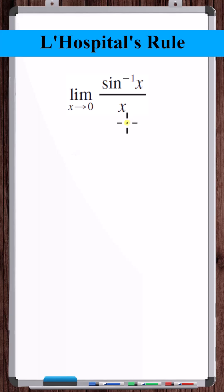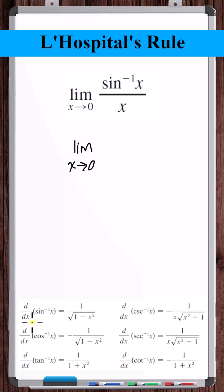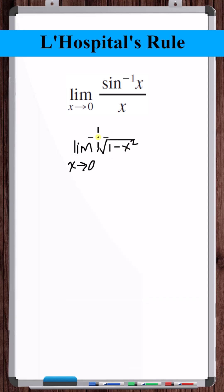An indeterminate form of type 0 over 0, we can solve using L'Hopital's rule. What is the derivative of the inverse sine of x? If we check the table of derivatives of inverse trig functions, the derivative of inverse sine of x is 1 over the square root of 1 minus x squared. The derivative of x is 1.